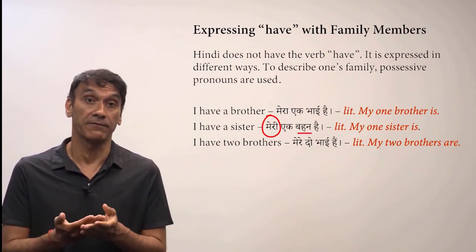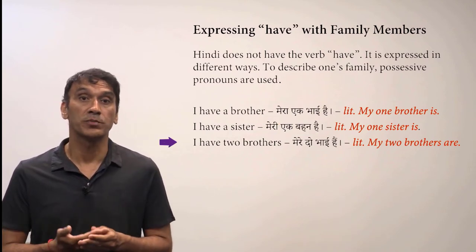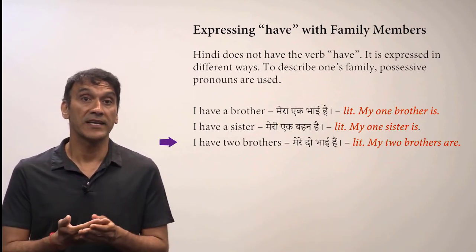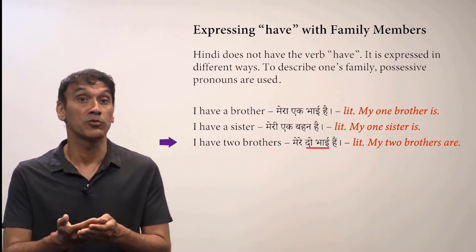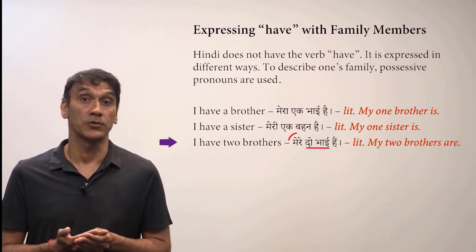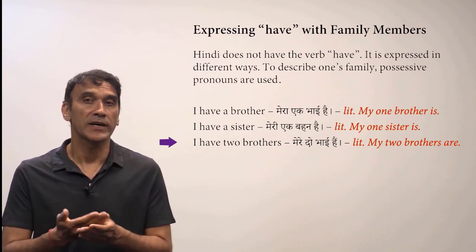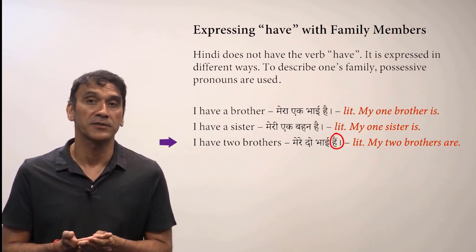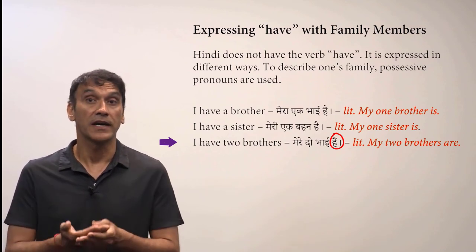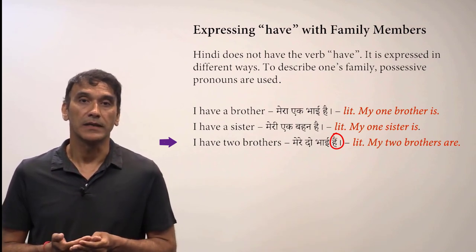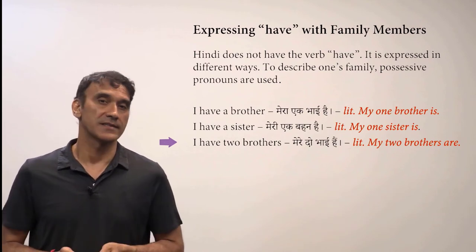The third example: 'I have two brothers' — mere do bhai hai. Do bhai means 'two brothers,' so the masculine plural possessive mere is used. Also note that the verb hona takes the third person plural form hain because of the two brothers — a noun in plural. The literal word order is 'my two brothers are.'